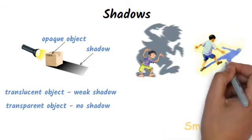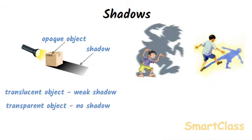Sunlight also forms shadows of objects which are on the ground or near the ground. For example, if we stand in the sun, our body casts a shadow on the ground. And when we walk, our shadow also moves with us. The shadow of an object can be seen only on a screen or a surface such as a wall of a building or the ground.